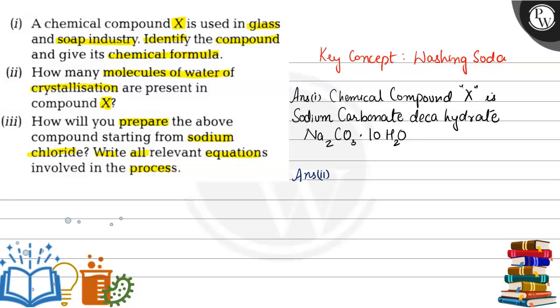Water of crystallization are the fixed number of water molecules present in a formula unit of a compound. As you can see in Na2CO3, these 10 water molecules are a fixed number. So our second bit's answer is 10 molecules.